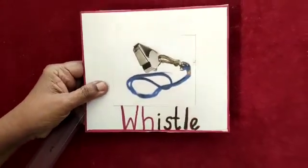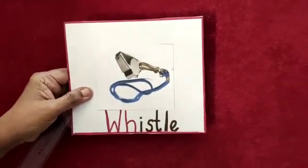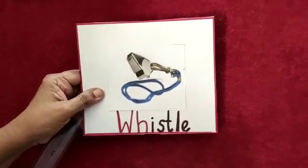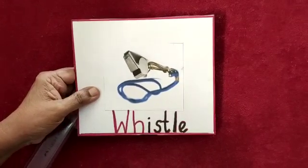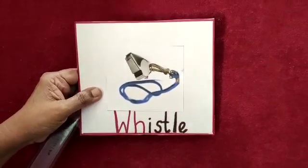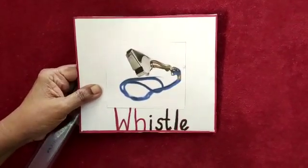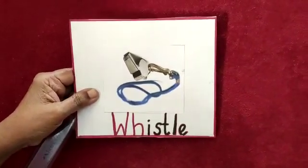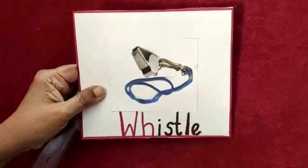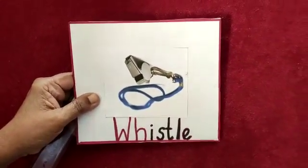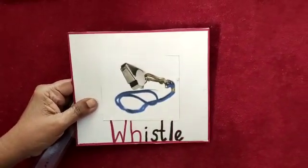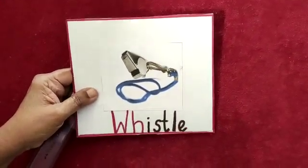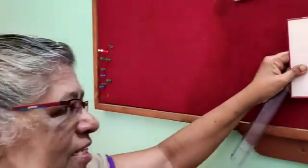And now we have a whistle. Can you see? A whistle is used for blowing. Who uses a whistle? The police, the guards, and we also use it during sports. Sometimes when you go to the railway station you see the station master using a whistle. Whistles are used to call somebody. So play with a whistle at home.